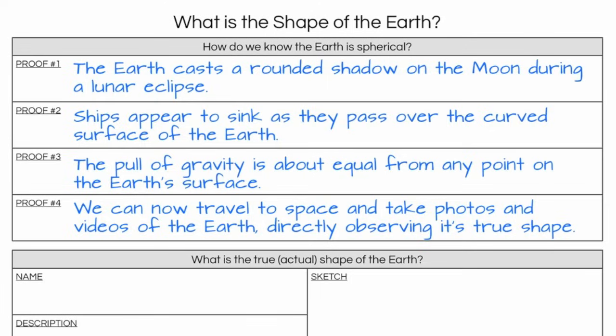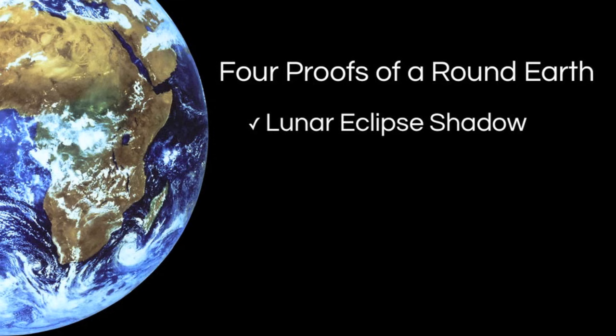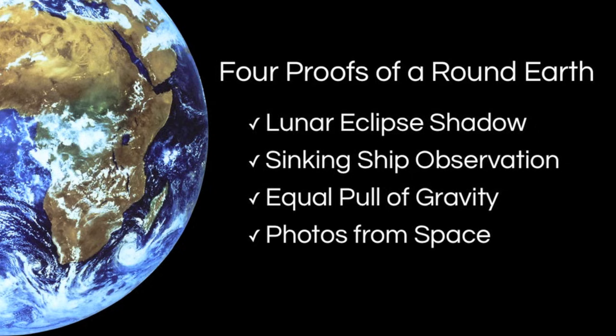And so those are our four major pieces of evidence supporting a round Earth. Now, of course, I could go on and on. We actually have dozens of proofs. But these are the four that we're going to focus on in our class. Just a quick review. The four proofs for a round Earth include the shadow during a lunar eclipse is round, so the Earth must be round. The sinking ship observation, where ships appear to sink as they pass over the horizon, that proves that the Earth is round. The fact that no matter where you go on the planet, there's an equal amount of gravity, that proves the Earth must be round. And then, most convincing of all, the fact that we can go and actually directly observe the Earth from space, that proves that the Earth is round. Thank you. Have a good night.